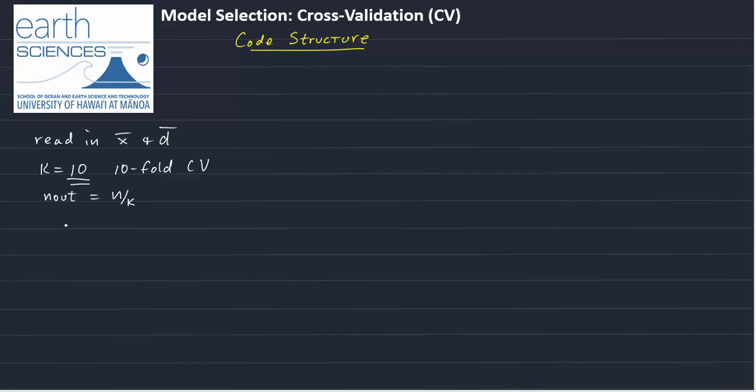And so the next thing we need to do is randomly perturb the order of our data. So in MATLAB, there is a function called randperm, r-a-n-d-p-e-r-m for random permutation. And the argument that you give it is n, the size of your data.